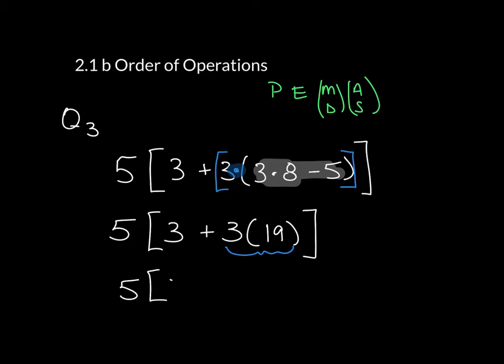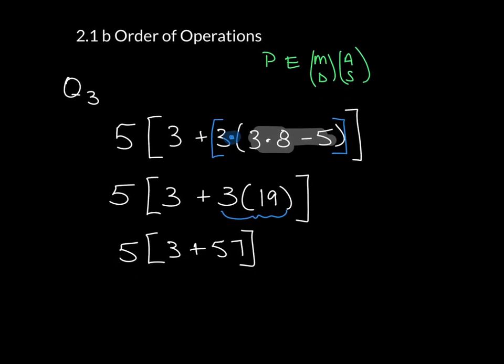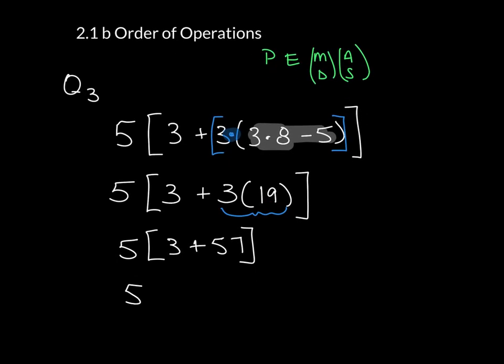The 5 stays on the outside. The 3 comes down. 3 times 19 gives us 57. Now I can go through and add those together and that becomes 5 times the quantity 3 plus 57, which is 60. And all of this question is equal to 300.